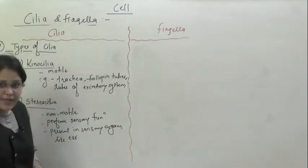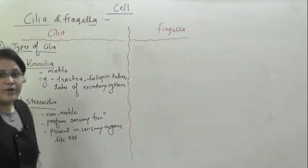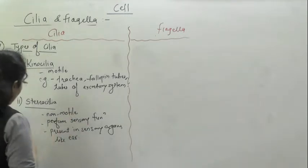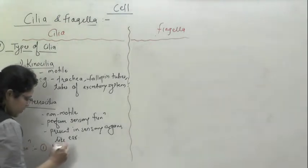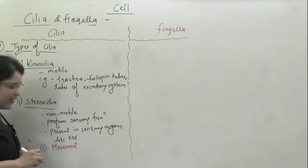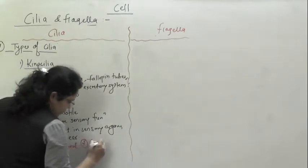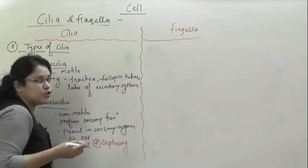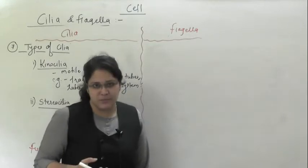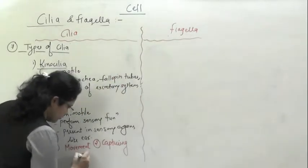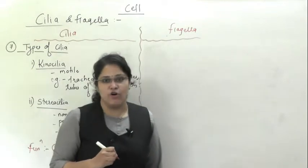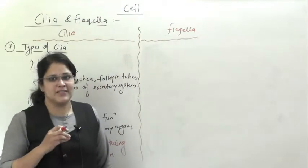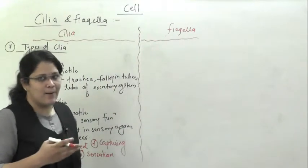Functions of cilia: first is movement. The second function is capturing — capturing of food particles, air, or dust particles. The third function is sensation, as these type of cilia present in sensory organs also perform the function of sensation. So these are the three functions performed by cilia.